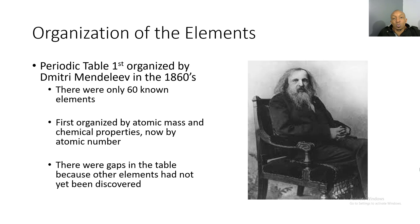The periodic table was first organized by Dmitri Mendeleev in the 1860s. There were only 60 known elements at the time. It was first organized by atomic mass and chemical properties, but now it's organized by atomic number. It is important to know that the atomic number is also the same as the number of protons. So if the atomic number or the number of protons were to change, it would also change the element.